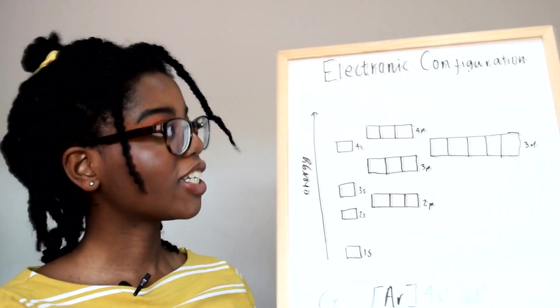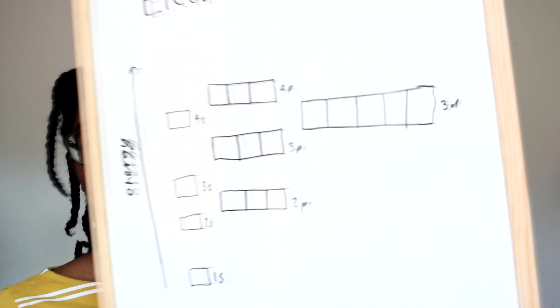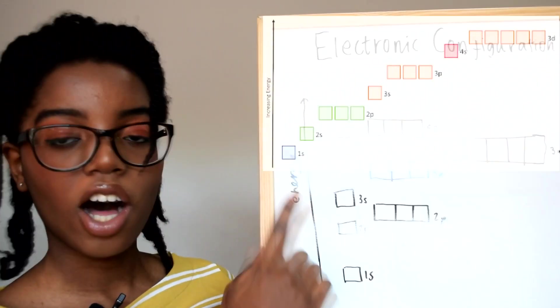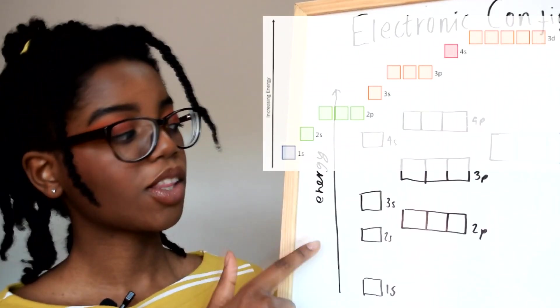So this is just an electron configuration diagram. It's got the orbitals and how the higher the principal quantum shells are the more energy they have.